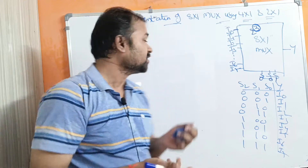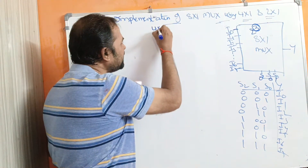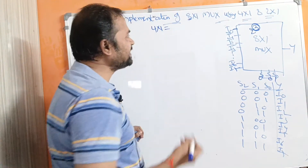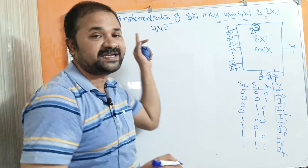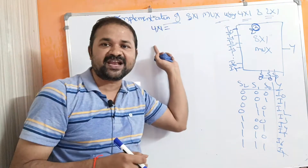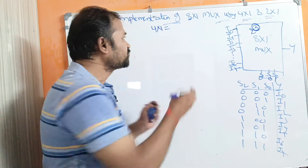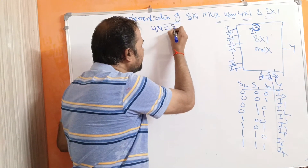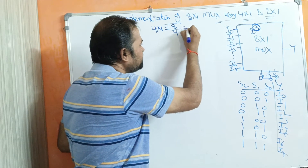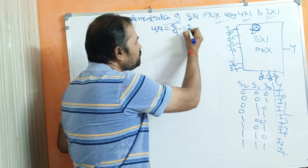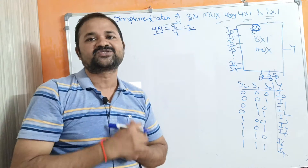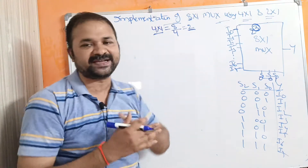First, we need to find out how many 4 by 1 multiplexers are required. The required multiplexer has 8 inputs, whereas the available multiplexer has 4 data inputs. So we need to divide the required multiplexer data inputs by the available multiplexer data inputs: 8 divided by 4 equals 2. Therefore, we require 2 four-by-1 multiplexers at level 1.